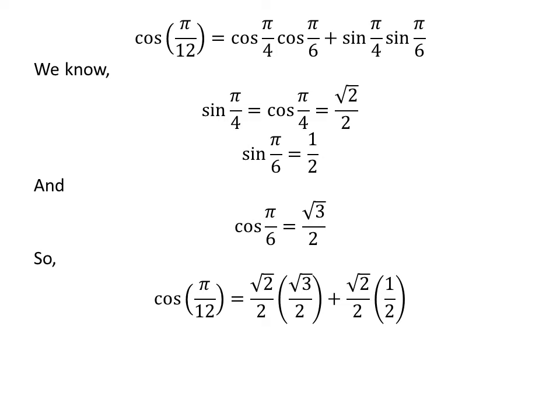Plugging these values into the equation for cosine of pi upon 12 gives us square root of 2 times square root of 3 upon 2 plus square root of 2 upon 2 times one half. Further simplification gives us cosine of pi upon 12 is equal to square root of 2 times square root of 3 upon 4 plus square root of 2 upon 4.